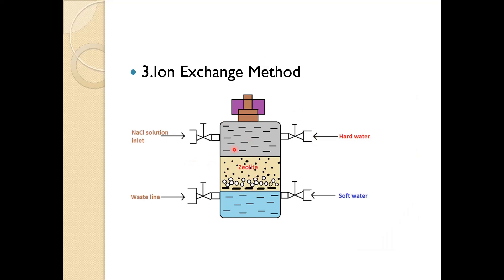This is the ion exchange method. It is used for the reduction of the hardness of water. A zeolite-like bed is used, and when hard water comes onto this bed, the ions of the hard material get exchanged with the zeolite bed and we get soft water. This way the water can be treated. The zeolite bed can also be recharged with NaCl solution, and the waste water can be used for other purposes.